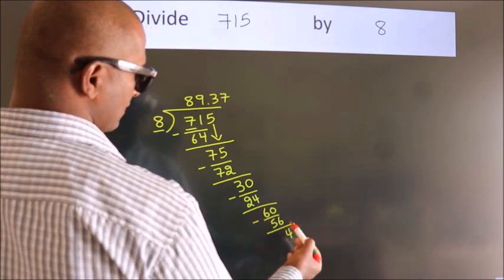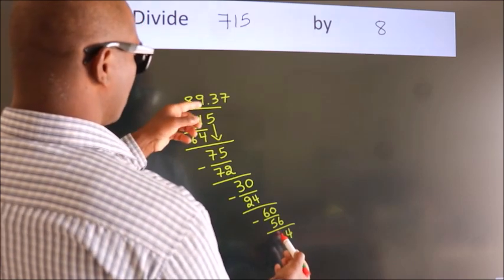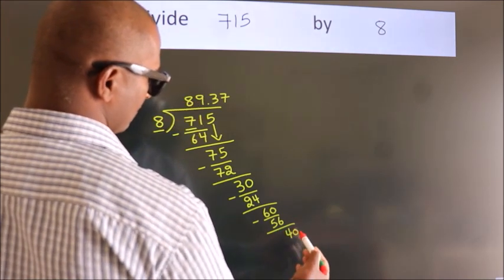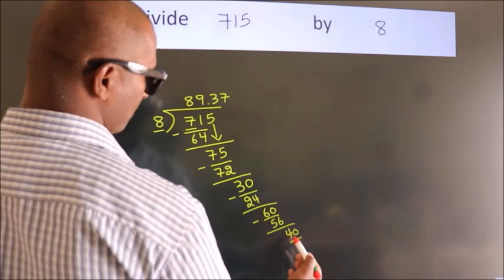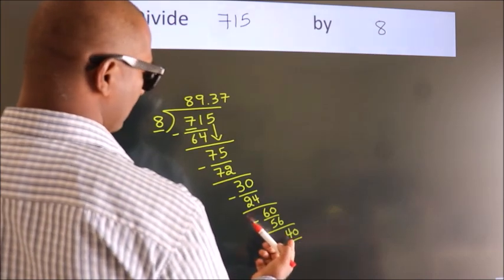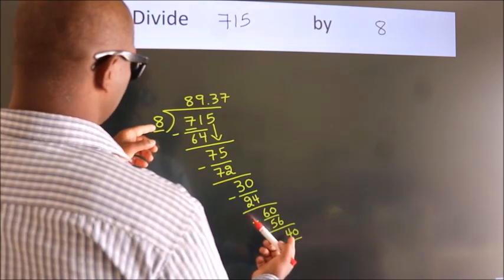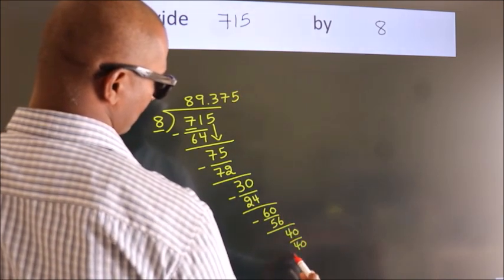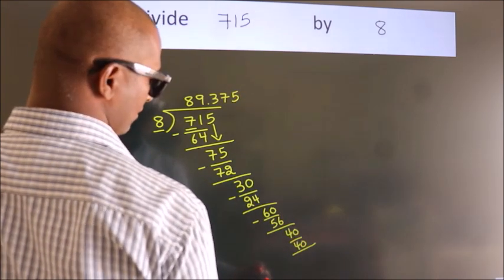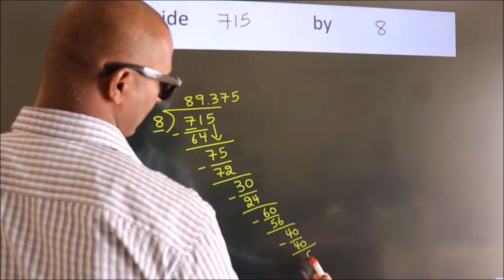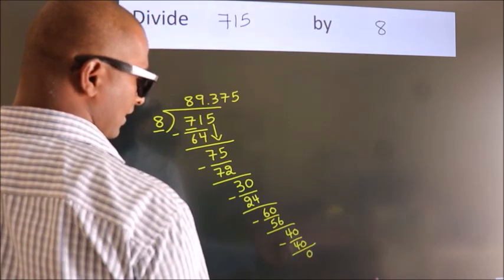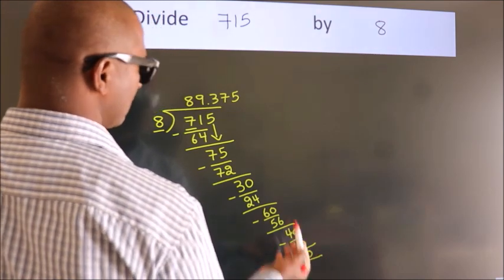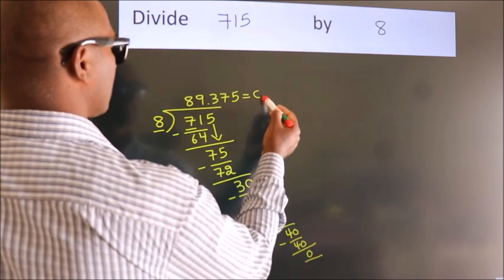After this, we already have the decimal, so directly take 0, making 40. When do we get 40 in the 8 table? 8 times 5 equals 40. Now we subtract and get 0. We got remainder 0, so this is our quotient.